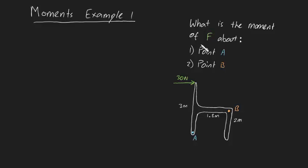What is the moment of F about - question one is point A and question two is point B. So here's our strange looking contraption. We've been given all the necessary geometries and we've been given this one particular force of 30 newtons.